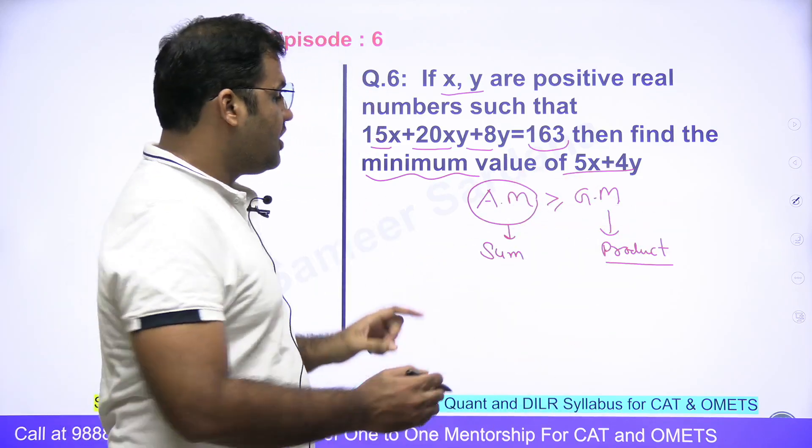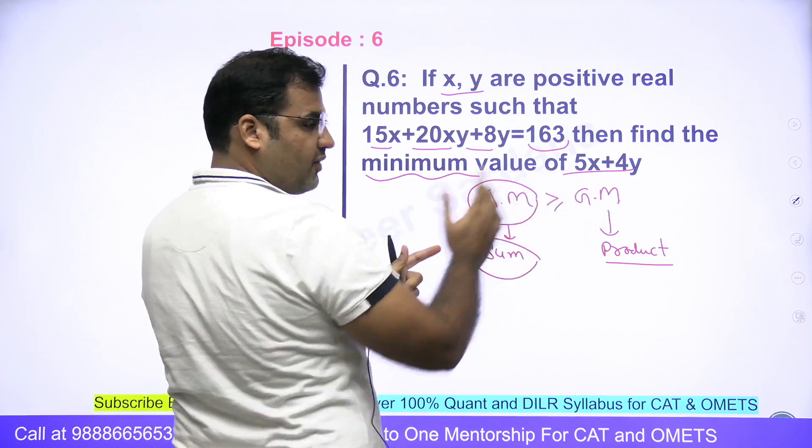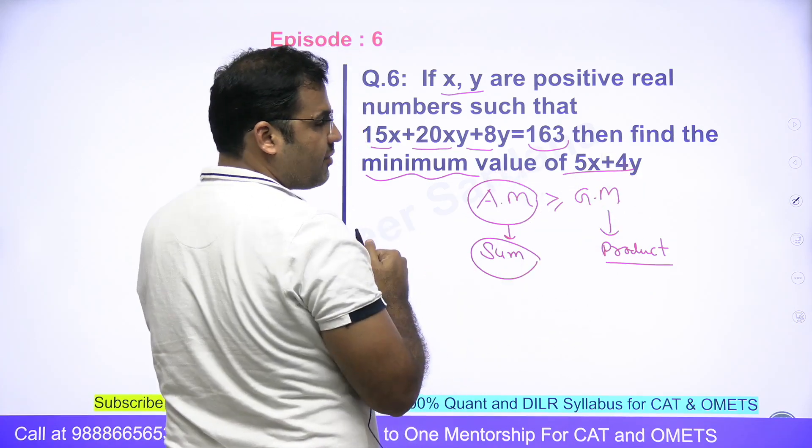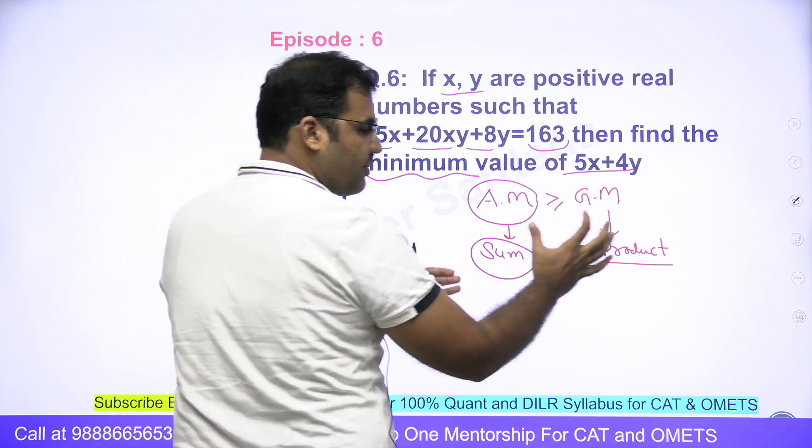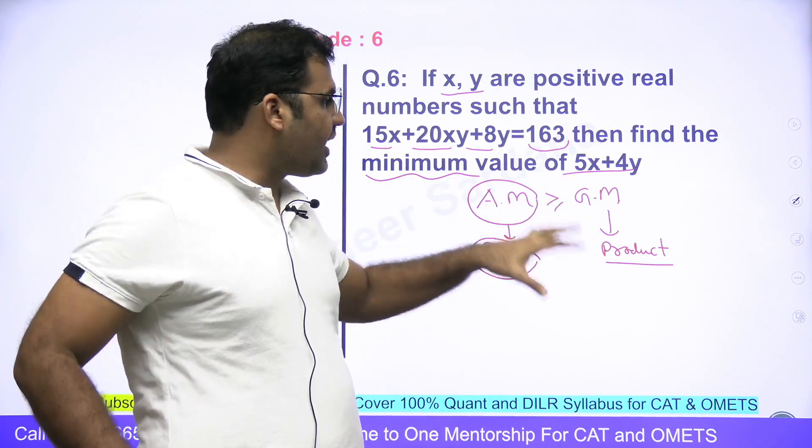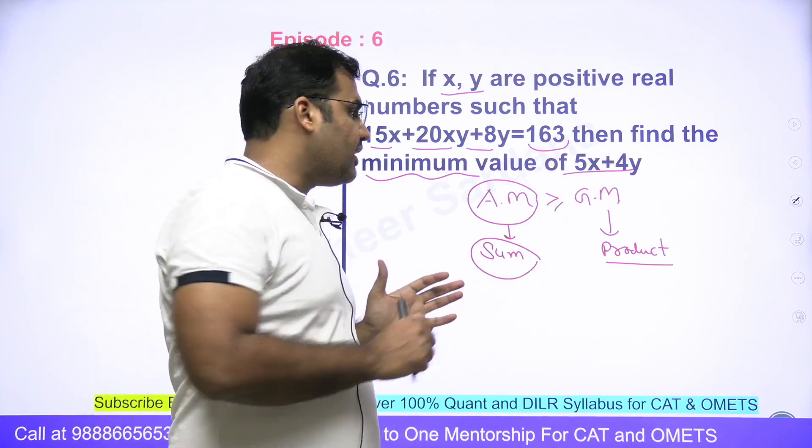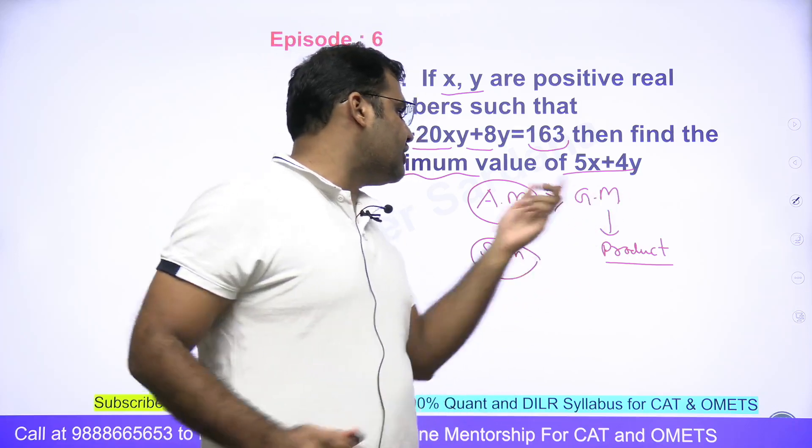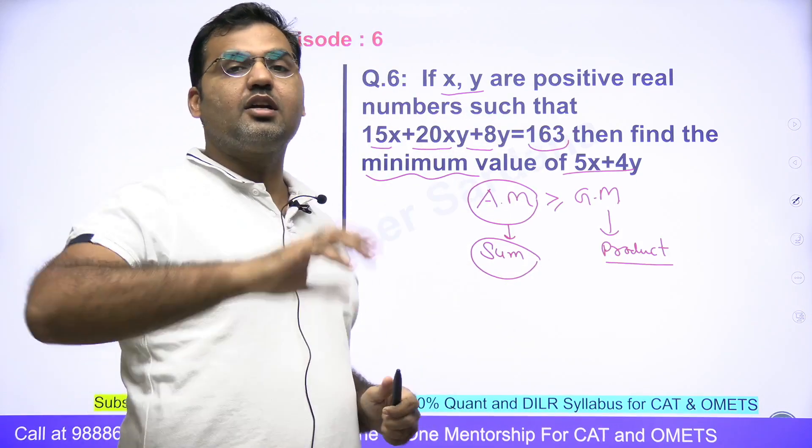This is greater than or equal to this. That means with the AM-GM rule, the expression which involves the sum sign, you always find the minimum of that expression. And the expression which is on the product side, you always find the maxima of the product expression. In this question, we are supposed to find the minimum value of 5x+4y. That means product should be given. If it is not given, then you need to look at this expression and convert it into a product form.